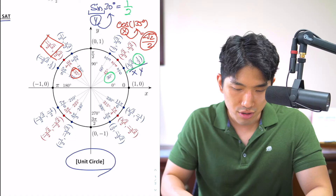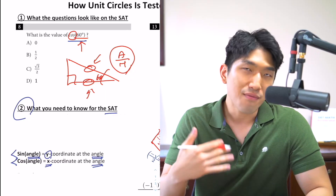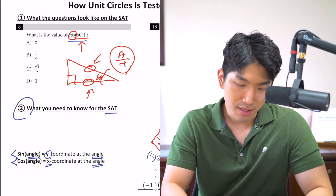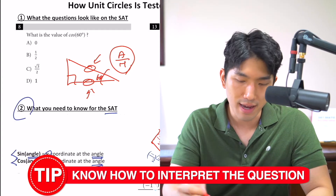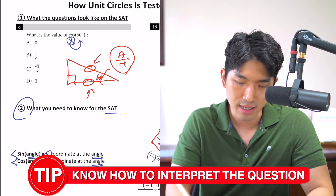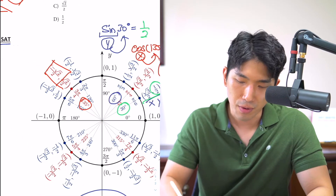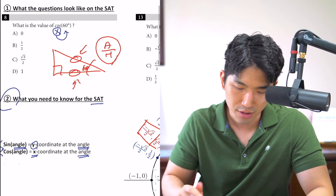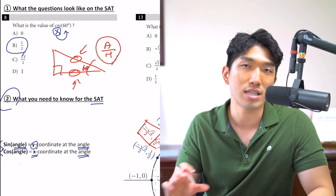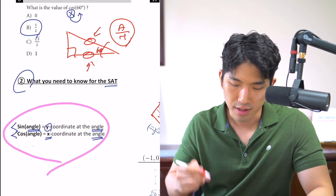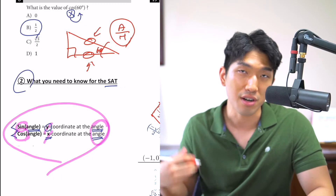Going back to the original SAT question: if the question asks for the value of cosine of 60, how do we interpret this? It's asking us to find the X coordinate at 60 degrees. We go to 60 degrees on the unit circle and find the X coordinate — it's going to be one half. So our answer is one half, choice B. The key concept is just this: sine refers to the Y value, and cosine refers to the X value at certain angles.